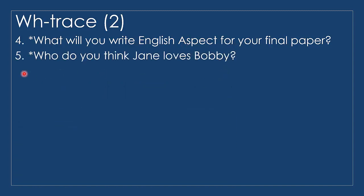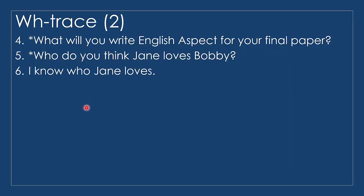We also have 'Who do you think Jane loves Bobby?' — 'Who' is generated as the complement of 'love,' so when it moves it leaves a trace, and we cannot fill the complement position of 'love' with another NP. If we do that the result is an unacceptable sentence. In 'I know who Jane loves,' this sentence is acceptable because the trace of 'who' in the complement position of 'love' is left empty — it moves to the specifier of C, and the trace is not filled with another NP.